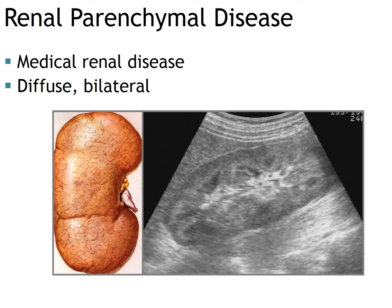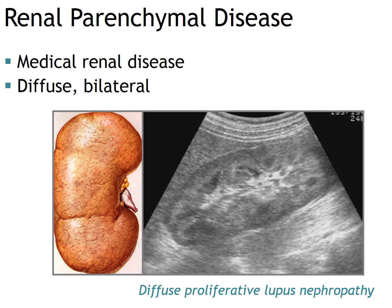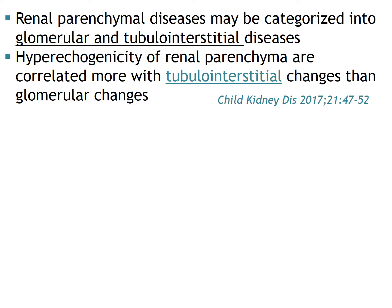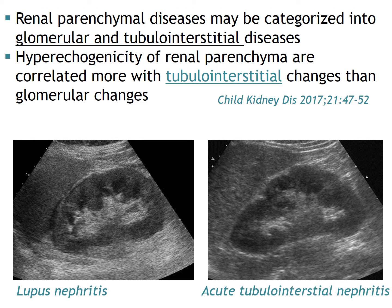Renal parenchymal disease, also called medical renal disease, is usually diffuse and bilateral. This is a case of diffuse proliferative lupus nephropathy showing diffusely abnormal renal cortical echogenicity. Renal parenchymal disease may be categorized mainly into two types: glomerular and tubular interstitial diseases. Hyperechogenicity of renal parenchyma is known to correlate more with tubular interstitial changes than glomerular changes. However, in practice, it is difficult to differentiate these two types based on changes in renal parenchymal echogenicity.